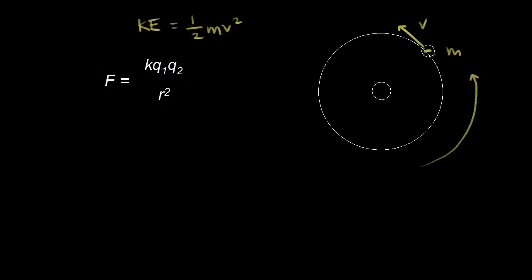We know that this electron is attracted to the nucleus. We have one proton in the nucleus for a hydrogen atom in the Bohr model, and there's a certain radius associated with where that electron is. The electron is attracted to the nucleus — there's an electric force, and this electric force acts as the centripetal force holding the electron in a circular orbit. We need this force for this video to come up with the kinetic energy for that electron.